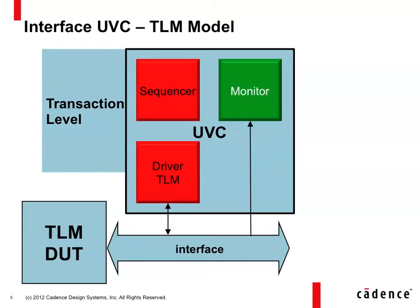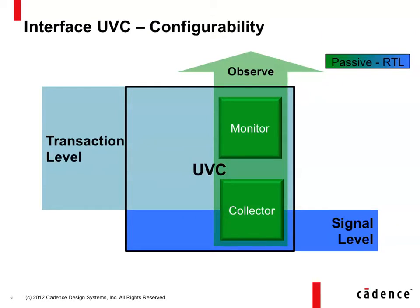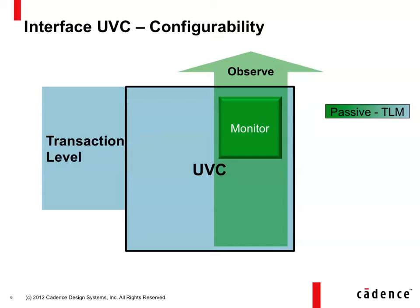So you can see there's a lot of flexibility in an interface UVC, and you can configure these to your particular application. The most common application is to drive at the signal level and observe from the signal level, so all subcomponents are instantiated and active. What's also very common is to use this UVC in a passive mode — for example, when you have an interface UVC in the middle of a DUT and just want to know what's going on on a particular interface or bus. You can also configure it to operate at just a transaction level, either by driving it or by being passive. This is a very adaptable and configurable component that can be used for almost any application.